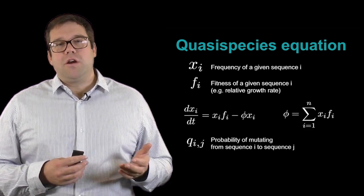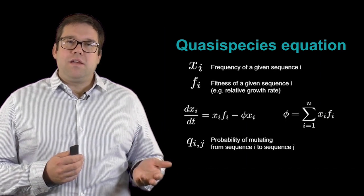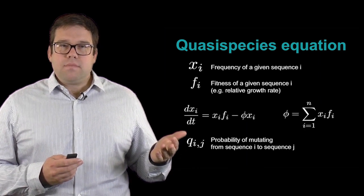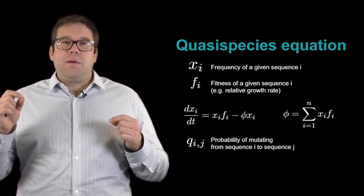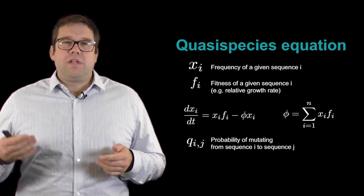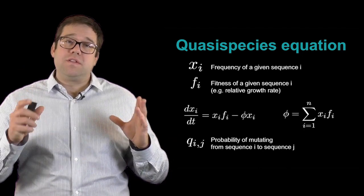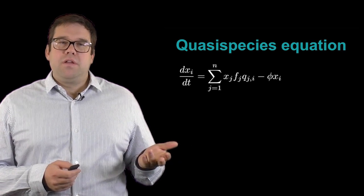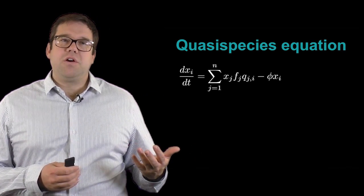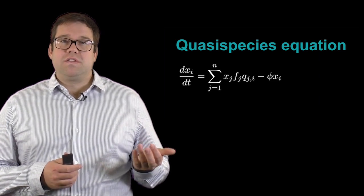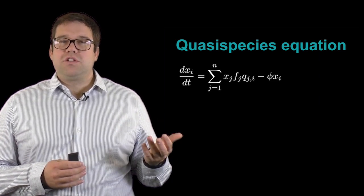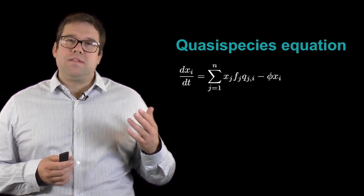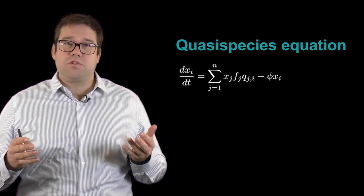We can do that by introducing another variable, q_i,j, which is the probability of mutating from sequence i to sequence j. This is actually a matrix then of every combination between i and j. It tells us how to mutate from one sequence to another, where all of the entries of this matrix are simply probabilities. Putting that all together, we now can write this model, which is the full quasi-species model as it's known, for the rate of change of one sequence, where we now have this sum of x_j times f_j times q_ji minus this death term.